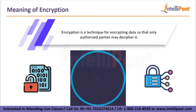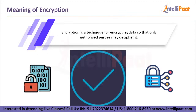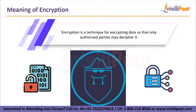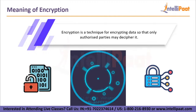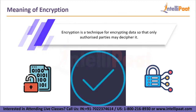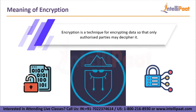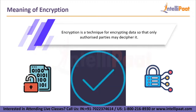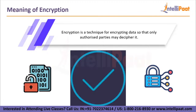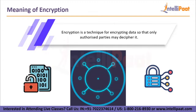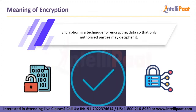Encryption is a technique for encrypting data so that only authorized parties may decipher it. It is the process of transforming human-readable plain text to incomprehensible text, also known as ciphertext in technical terms. Encryption necessitates the employment of a cryptographic key, which is a set of mathematical values agreed upon by both the sender and receiver of an encrypted message. Although encrypted data appears to be random, encryption follows a logical, predictable pattern allowing a person who has the correct key to decrypt it and return it to plain text.